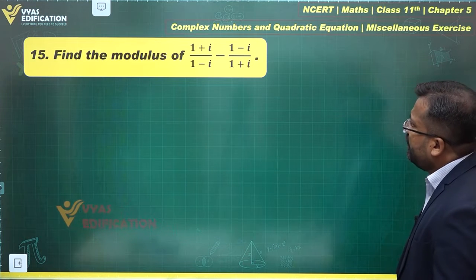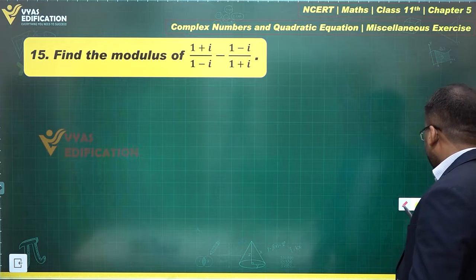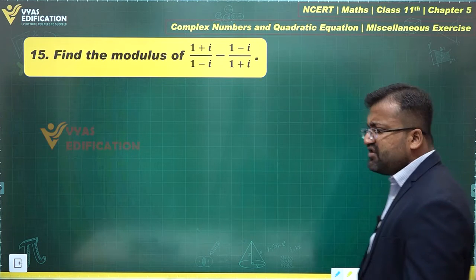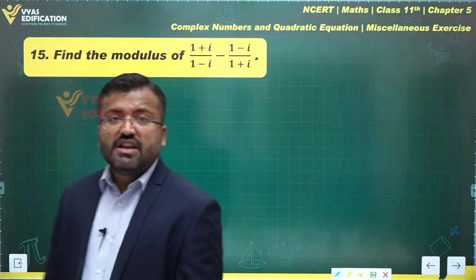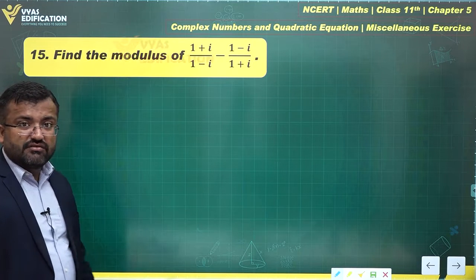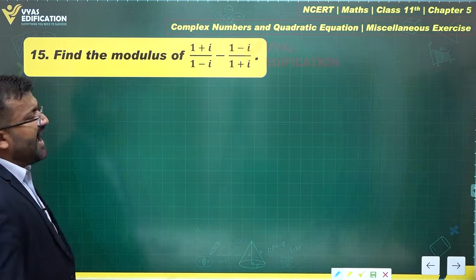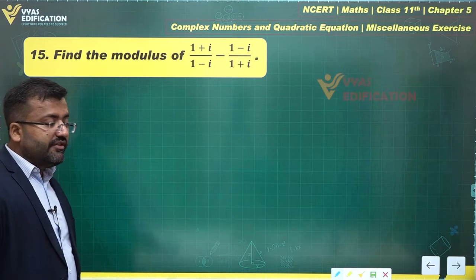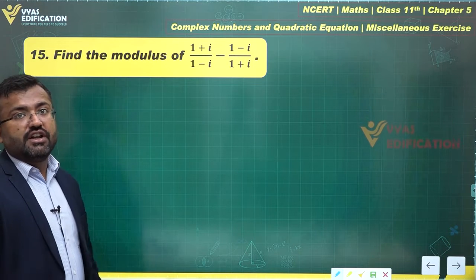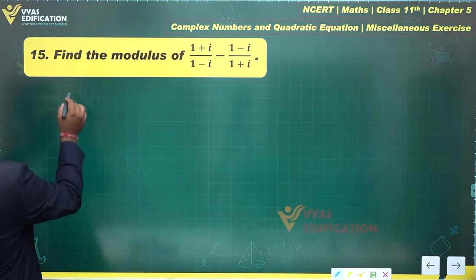Find the modulus of this expression, this complex number. If you are supposed to find the modulus, we'll have to simplify first, since the complex numbers are in addition and subtraction. They're not in multiplication or division. Had they been only in multiplication or division, we could have applied properties of modulus, but here we cannot apply properties of modulus directly. We'll have to simplify first.